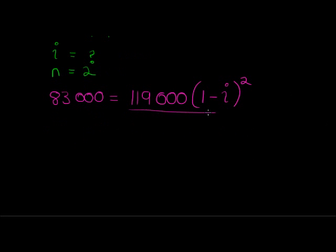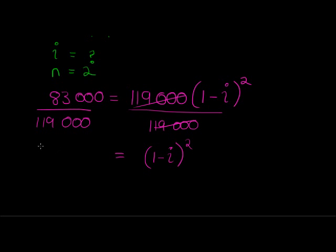So here we go. We solve by dividing by 119,000 on both sides. Dividing by 119,000 on both sides so that I'm left with 1 minus I squared. And on this side, I'm not even going to calculate it yet. I'm going to calculate everything in the end.